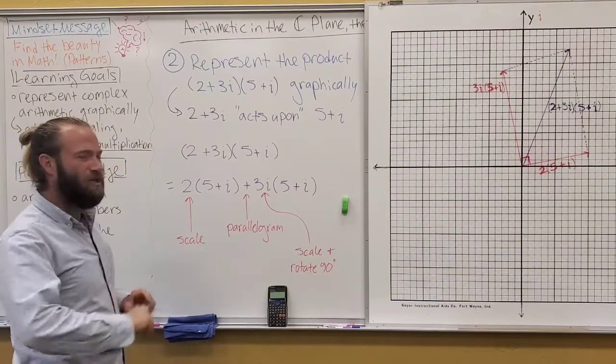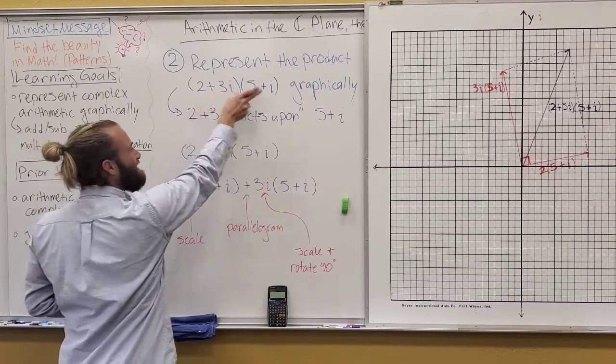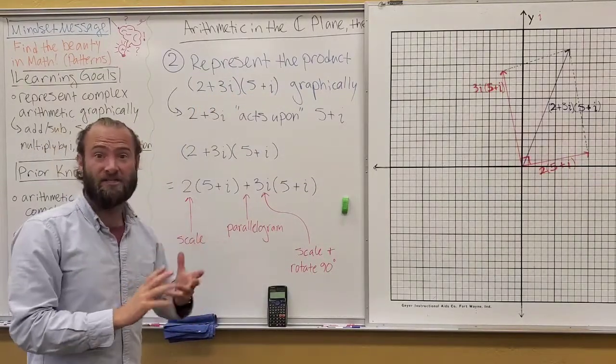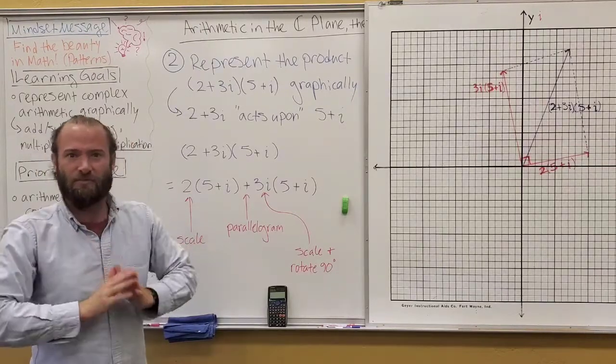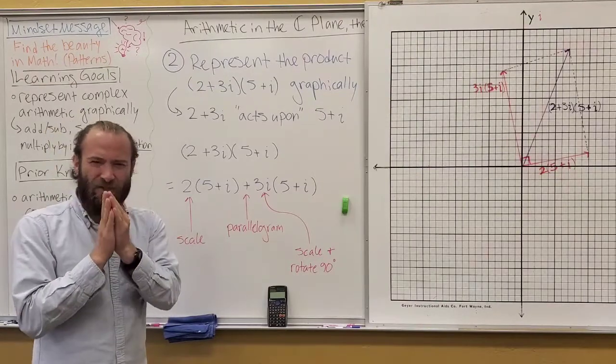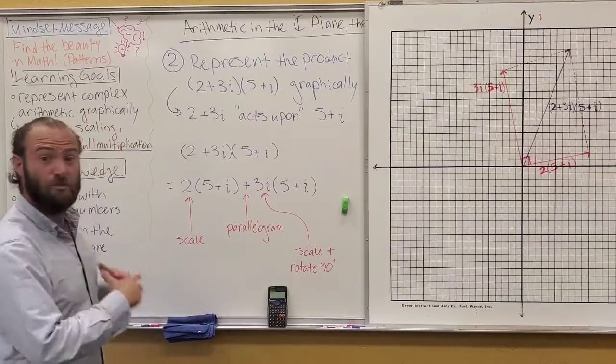One shift in our mindset that has to happen is we have to think of the first complex number as acting upon the other complex number, and altering it in some way. And that's actually just like the examples that we did previously, only we just had one single number. This full complex number has a lot going on with it. So, let's just break it down.